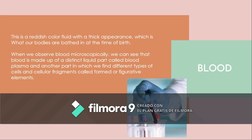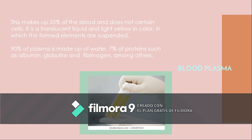Blood is a reddish liquid with a thin appearance. When we observe blood microscopically, we can see that it is made out of a distinct liquid part called blood plasma, and another part in which we find different types of cells and cellular fragments called formed elements. Blood plasma makes up 55% of the blood. It is a translucent liquid, light yellow in color, in which the formed elements are suspended. Ninety percent of plasma is made of water, and 7% consists of proteins such as albumin, globulins, and fibrinogen, among others.